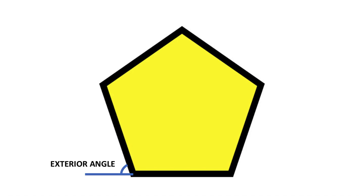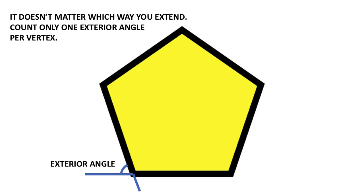You might wonder which way you're supposed to extend the side. It turns out it doesn't matter which way you extend the side of the polygon. If you extend it downwards, the angle you get is going to be the same as the angle we drew first, because of the property of vertically opposite angles — both of those angles are exactly the same. So the exterior angle won't change depending on which way you extend it. The formulas we use want you to use either one — just extend it once and use that angle once.